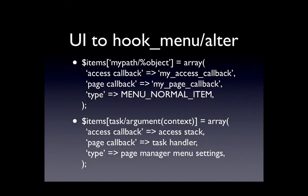Back to the hook_menu analogy: at the top bullet point, we have a typical hook_menu call where we define the actual path — I have said it is 'my-path/%object' — an access callback, a page callback, and then the type of menu item we want. On the second bullet point, I've tried to break this down into the various plugins used within Page Manager. Within our path area, I have task and argument — the task takes care of all of that section, but if an argument is passed there, the task can actually create a context from it. Our access callback is replaced by Page Manager's access stack, the page callback is replaced by a task handler, and Page Manager also has the ability to set the menu settings.